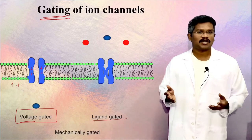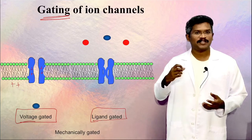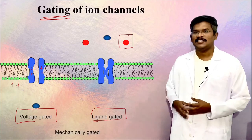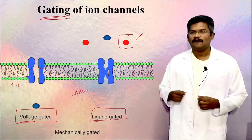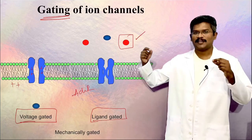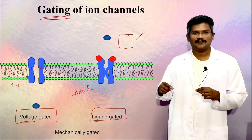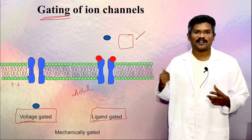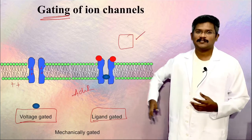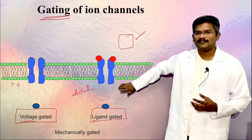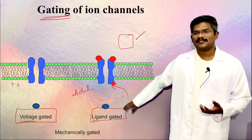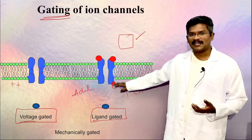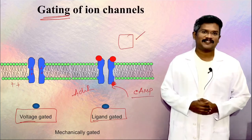A ligand-gated ion channel opens or closes when a ligand binds to the ion channel. This is an acetylcholine-gated ion channel located in the neuromuscular junction. When two molecules of acetylcholine bind to this ion channel, it opens and allows the movement of ions. In certain channels, the ligand also binds on the intracellular side. One example is the cyclic nucleotide-gated channels. Some of them are opened by binding of cyclic AMP to the intracellular side.